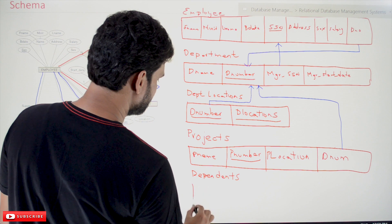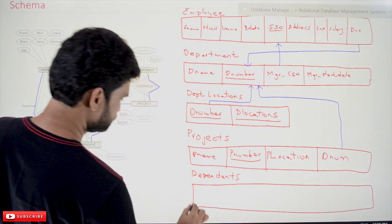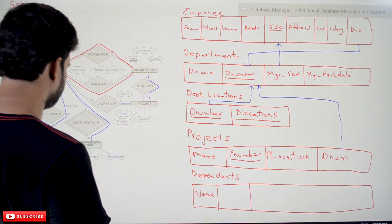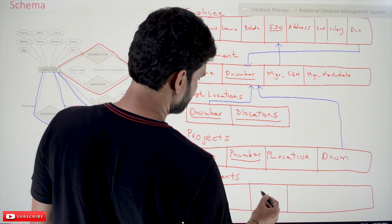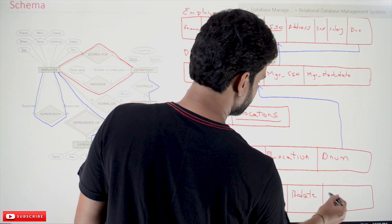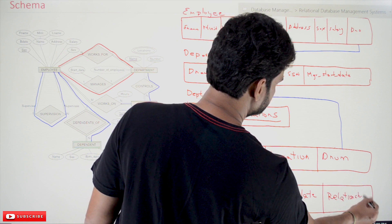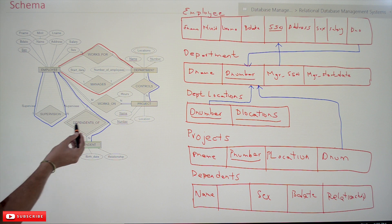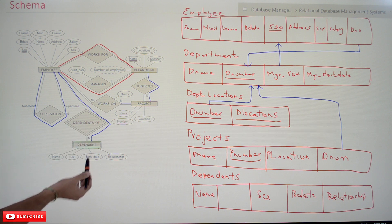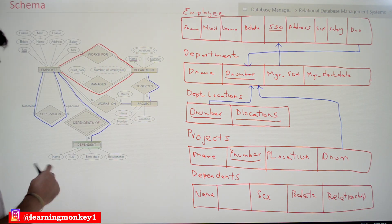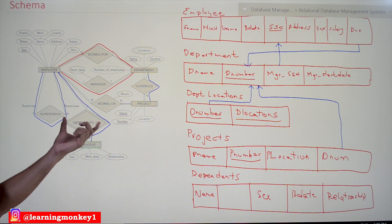The next table is Dependents. The attributes of this table are: name, sex, birth date, and relationship. We considered this as a weak entity in a one-to-many relationship. Entity types are called weak entities when they do not have a primary key to independently identify each row.